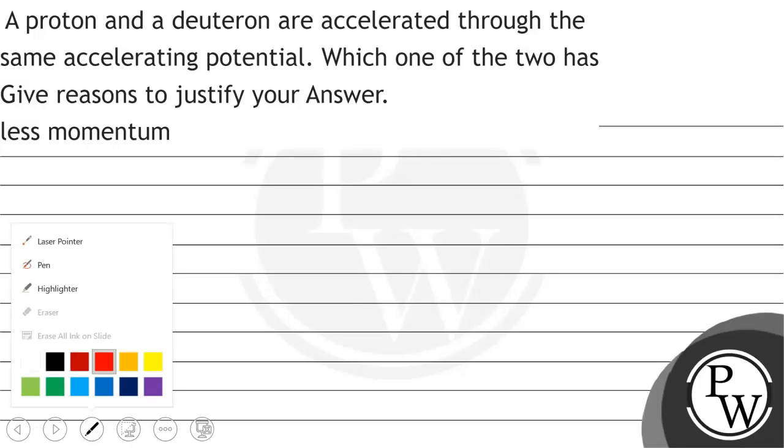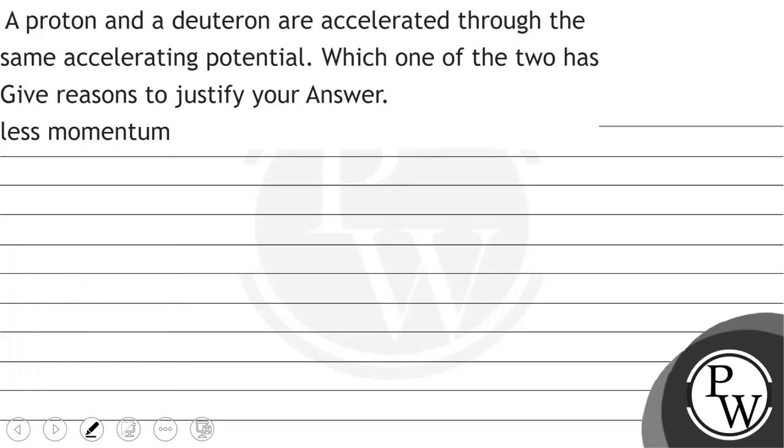Hello, let's read the question. The question says that a proton and a deuteron are accelerated through the same accelerating potential. Which one of the two has less momentum? Give reasons to justify your answer.